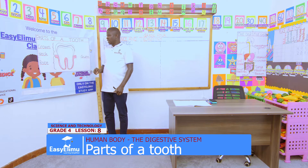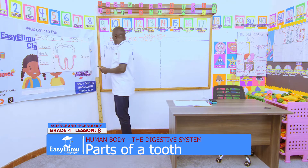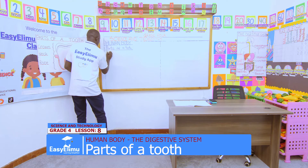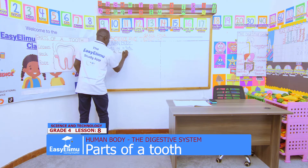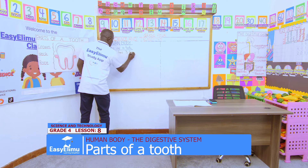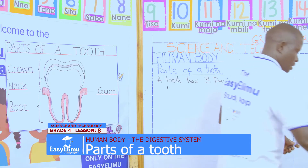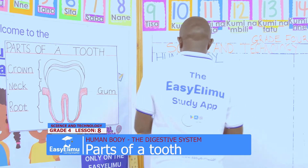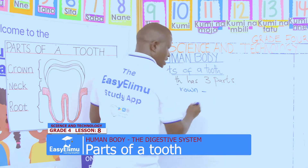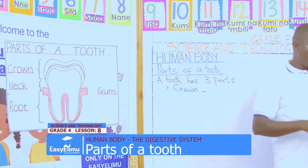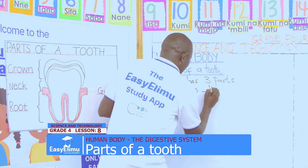The root is attaching the tooth to our bones, our body. The part that joins the tooth and the crown we call the neck. So the tooth has three parts. Part number one is the crown. Crown is the outer part that we see - the outer part that we can see is called the crown.